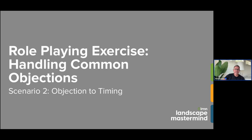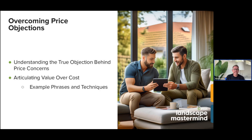Going back to price objections: a few things to keep in mind when developing talk tracks for different customers. The core thing we're always trying to do is articulate the value over the price or cost of the work. Most people naturally think every landscaper does the same work — we all know that's not right. We have to educate them that installation methods, practices, and details around how we do things are very different. A thousand square foot patio can cost ten thousand dollars or forty thousand dollars, and they are not the same thing.